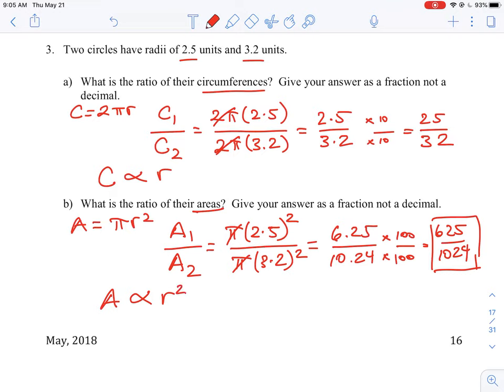So another way to look at this question would be to go back to question A and look at what our original radius ratio was here for circumference. Okay, in question A, we had 25 over 32 as our ratio. So that means area is proportional to the radius squared.